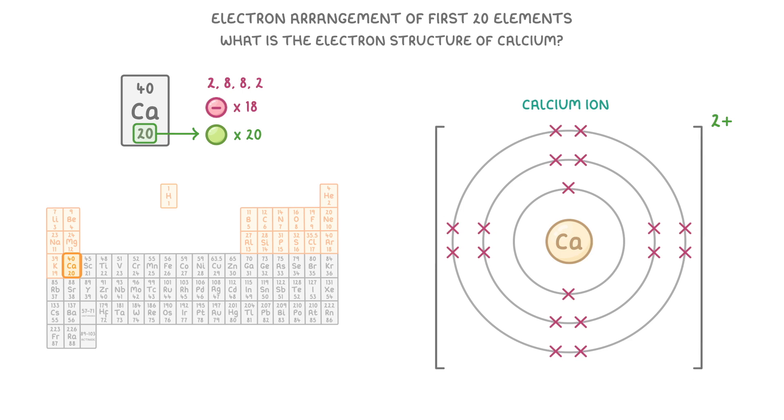With ions, we always draw big square brackets around them and write the overall charge in the top right corner. Because our calcium atom lost two electrons, to write the electron structure, it would now just be 2, 8, 8.